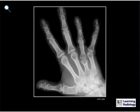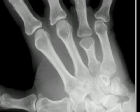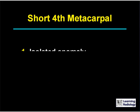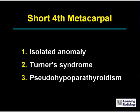Here's the next differential diagnosis. The differential diagnosis is for a short fourth metacarpal bone. There are three major causes. The causes of a short fourth metacarpal include an isolated anomaly, Turner's syndrome, and pseudo-hypoparathyroidism.